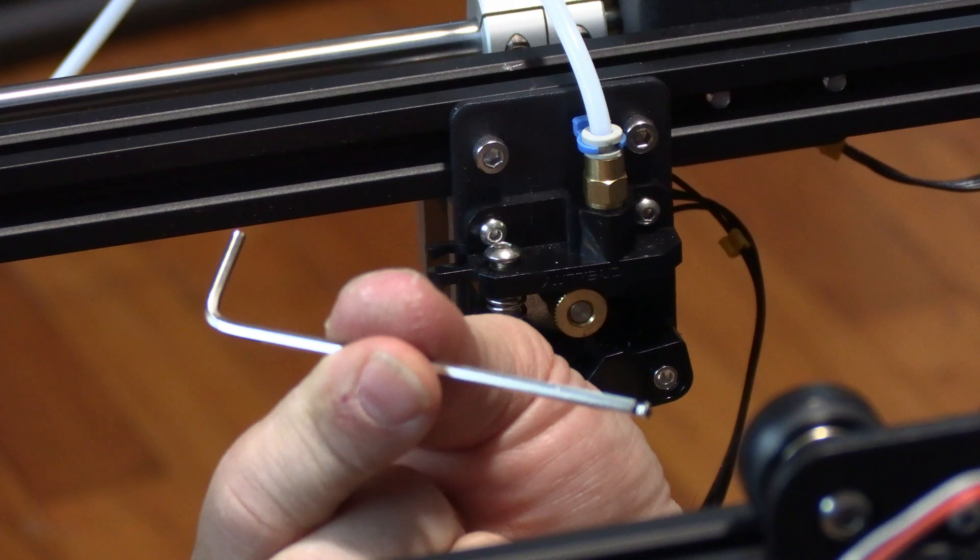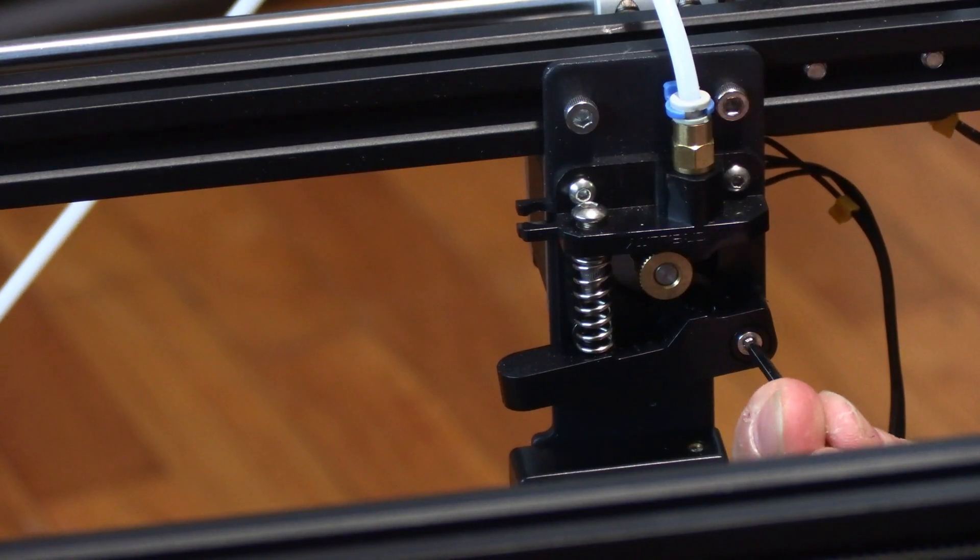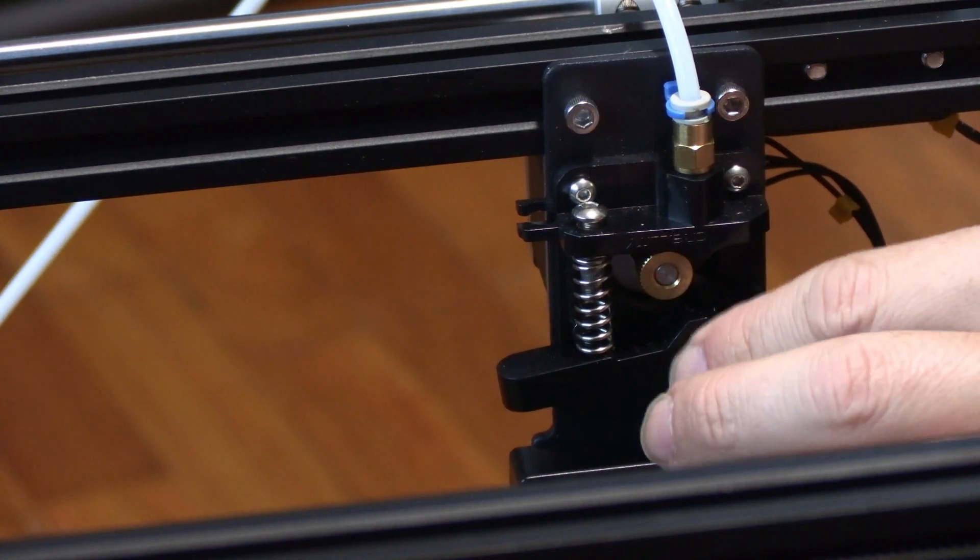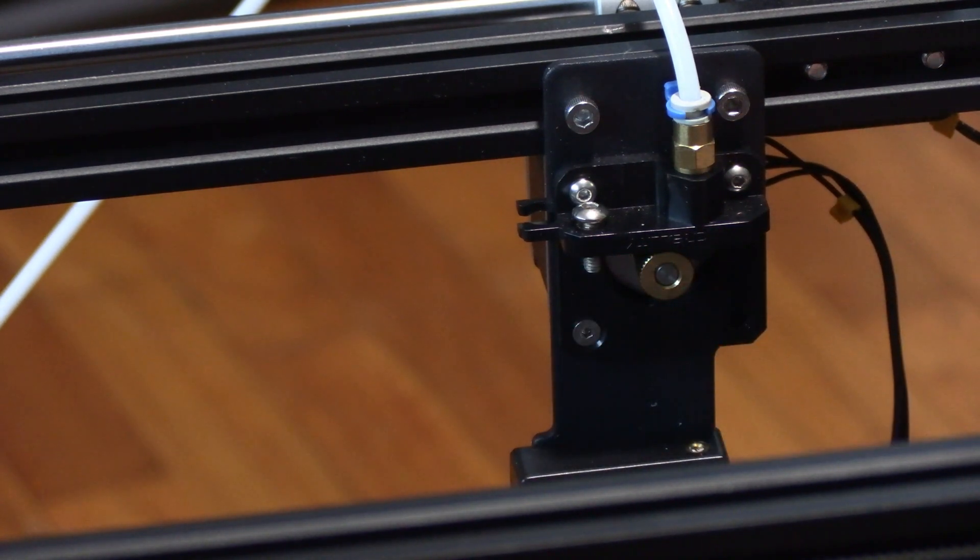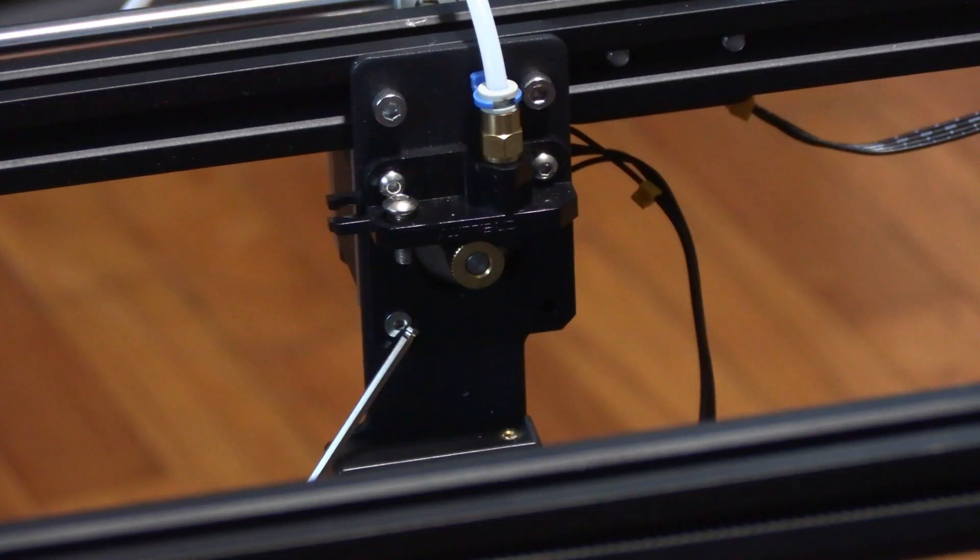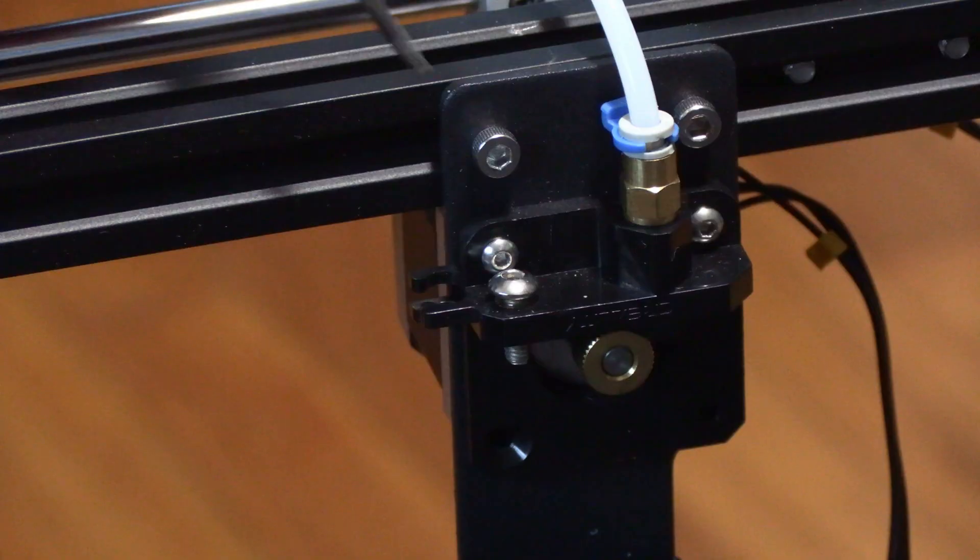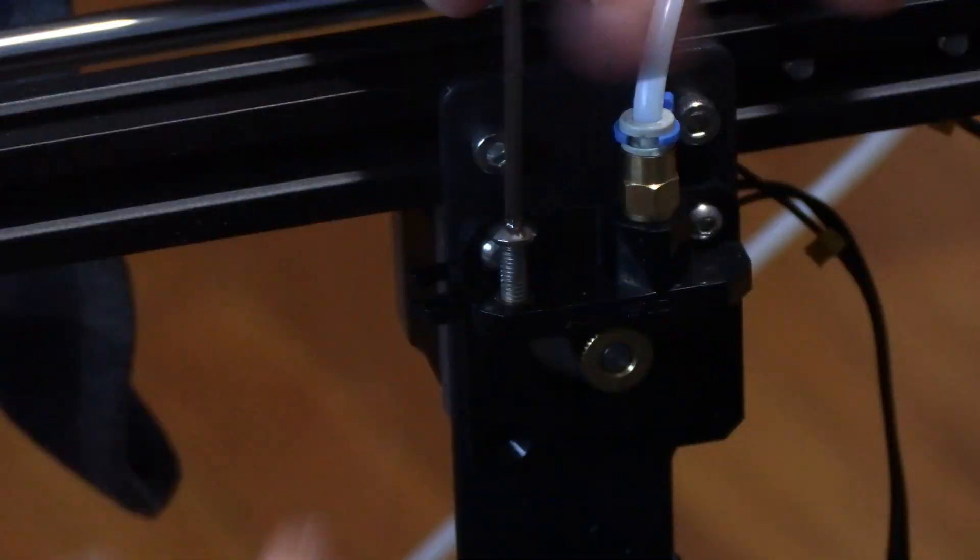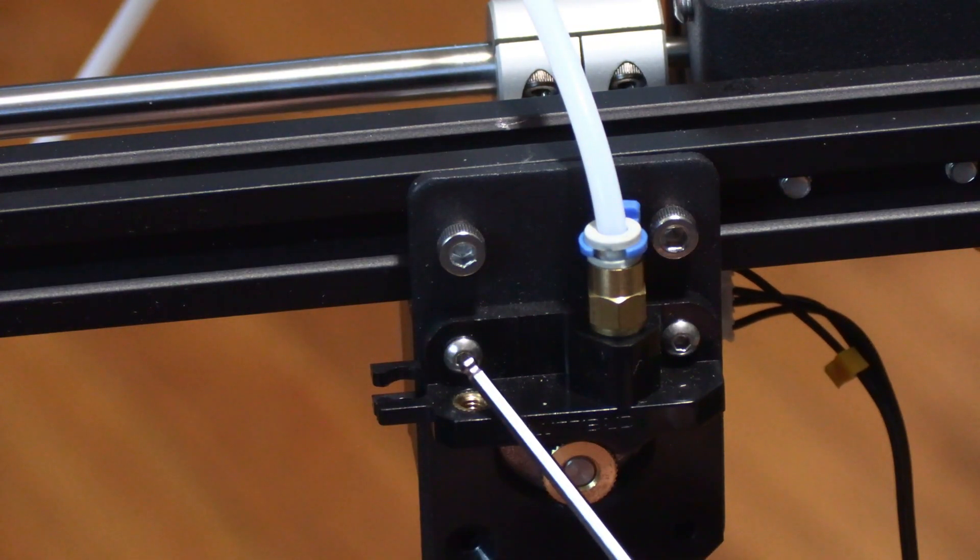I am going to use the allen keys that came with the machine right here in the arm of the extruder and unscrew it. Right here in the corner of the extruder, take this tensioner screw and back it out completely. These two screws on both sides of the extruder.